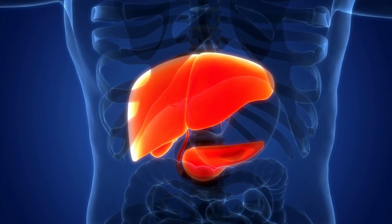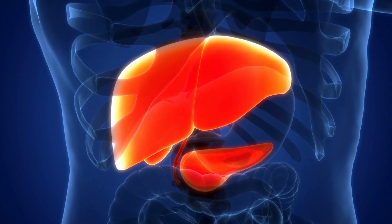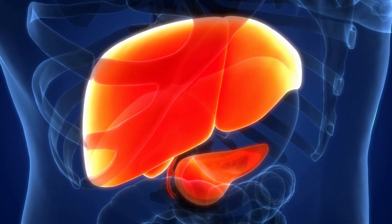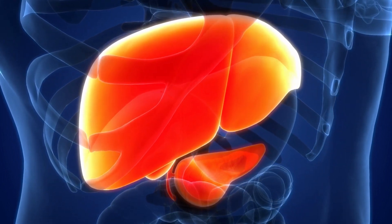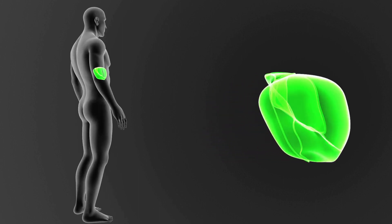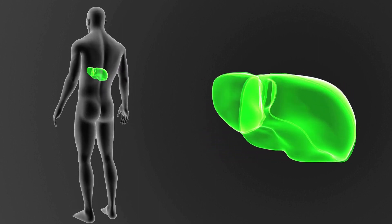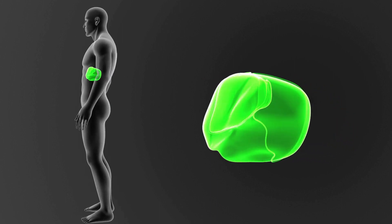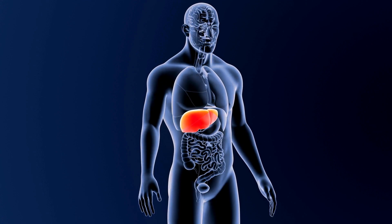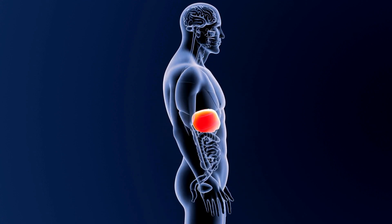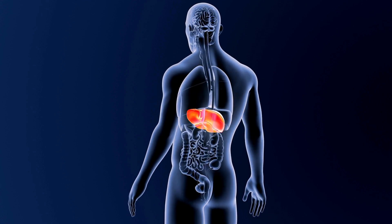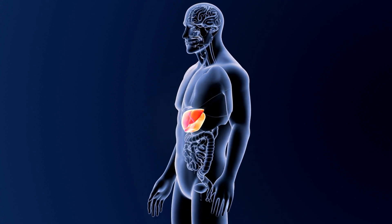The liver is divided into the left and right lobes by the presence of the falciform ligament. Further, from the right lobe, two accessory lobes arise, called the caudate lobe and quadrate lobe. The caudate lobe is located on the upper portion of the liver's visceral surface between the inferior vena cava and the fossa produced by the ligamentum venosum. The quadrate lobe is in the lower portion of the liver's visceral surface, lying between the gallbladder and the fossa produced by the ligamentum teres.